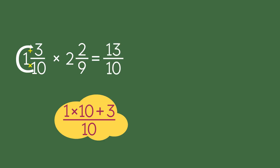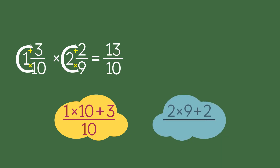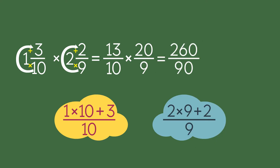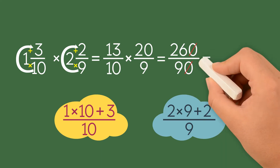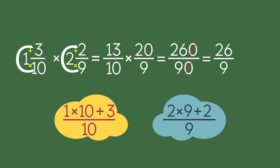Now let's do the same for the second mixed number. We multiply the denominator by the whole number and then add it to the numerator. So the numerator is 2 times 9 plus 2, and the denominator stays the same. The improper fraction is 20 over 9. We multiply the two improper fractions to get 260 over 90. We can simplify by dividing both the numerator and denominator by 10 to get 26 over 9. Now we turn it into a mixed number by dividing 26 by 9. So the final answer is 2 and 8 over 9.